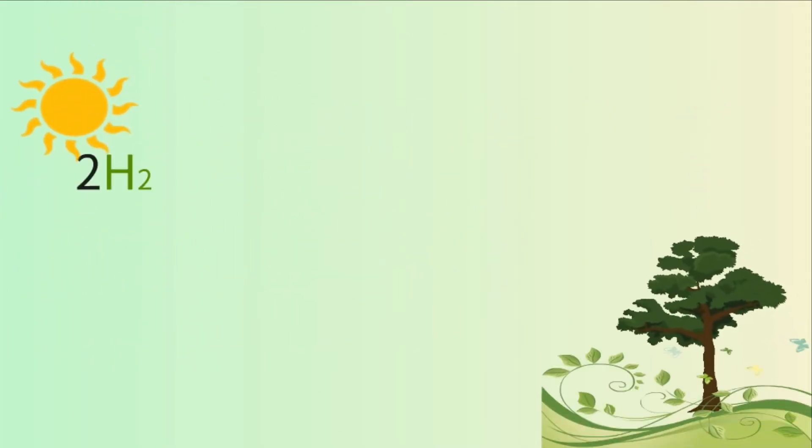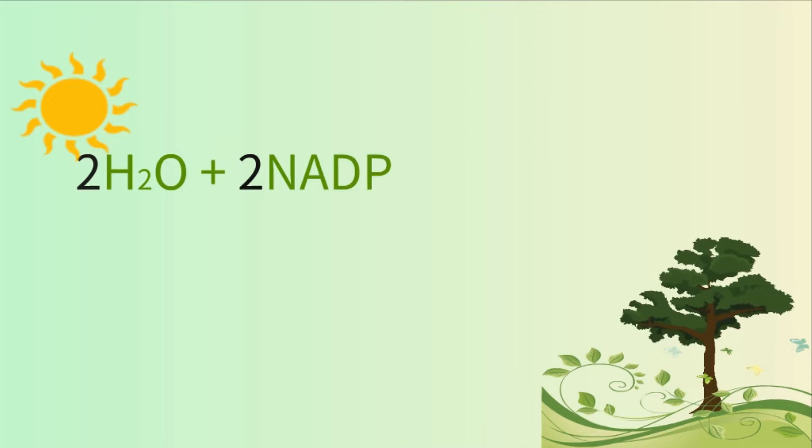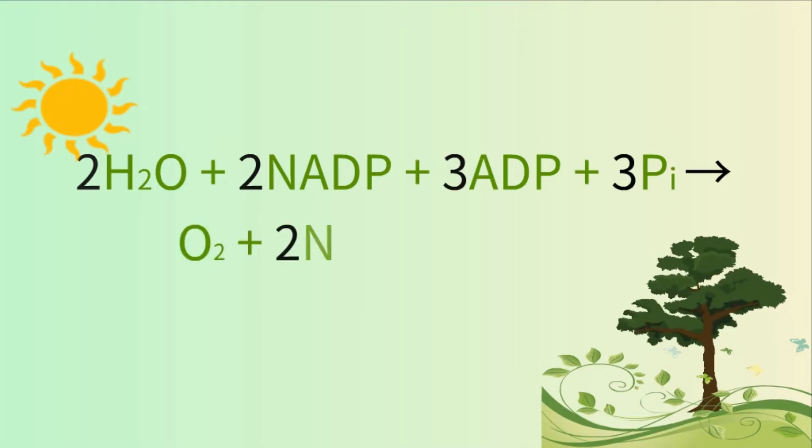The chemical equation for the light reaction of photosynthesis can be reduced to: two molecules of water, two molecules of NADP, three molecules of ADP, and three phosphate atoms produce one oxygen molecule, two molecules of NADPH, and three molecules of ATP.